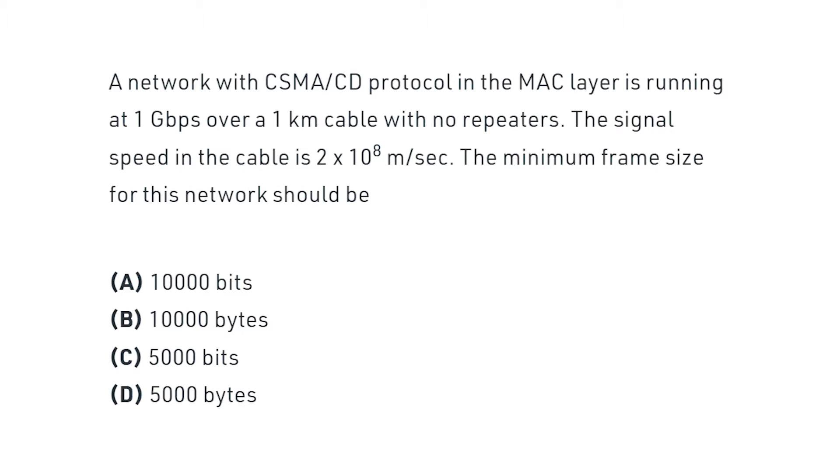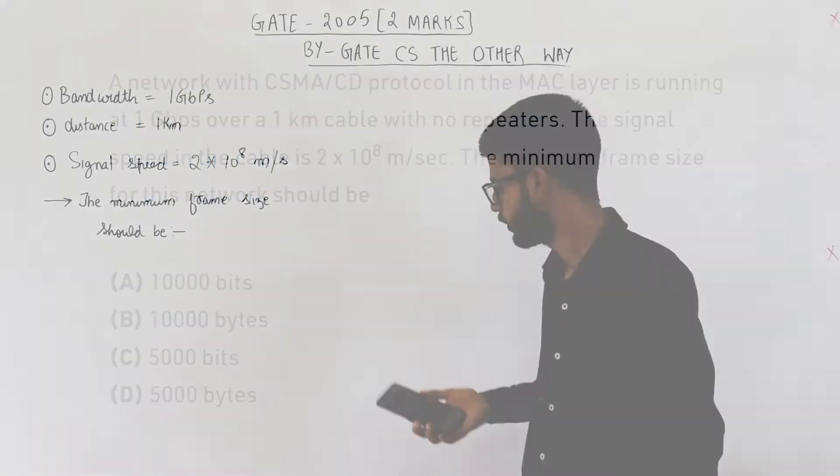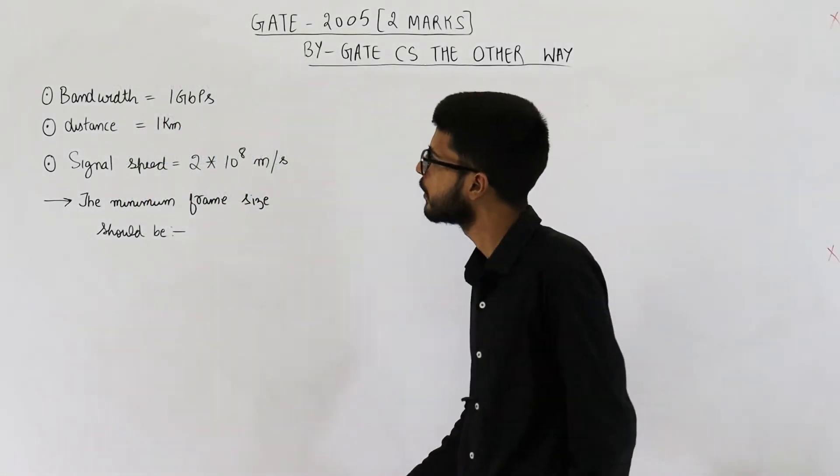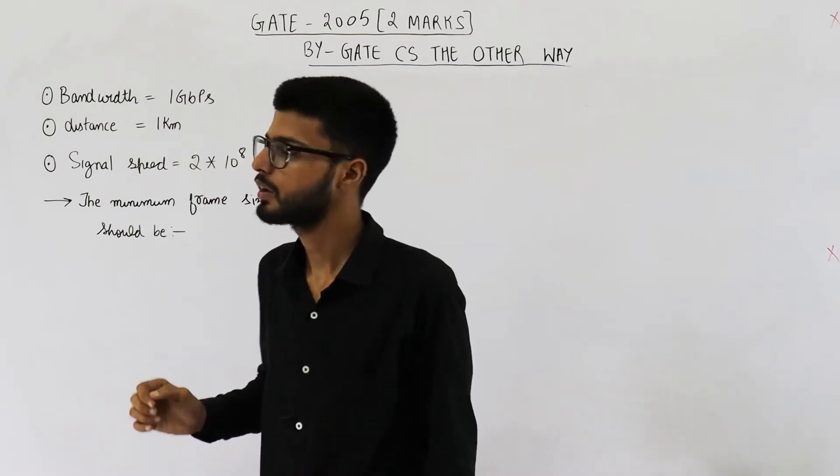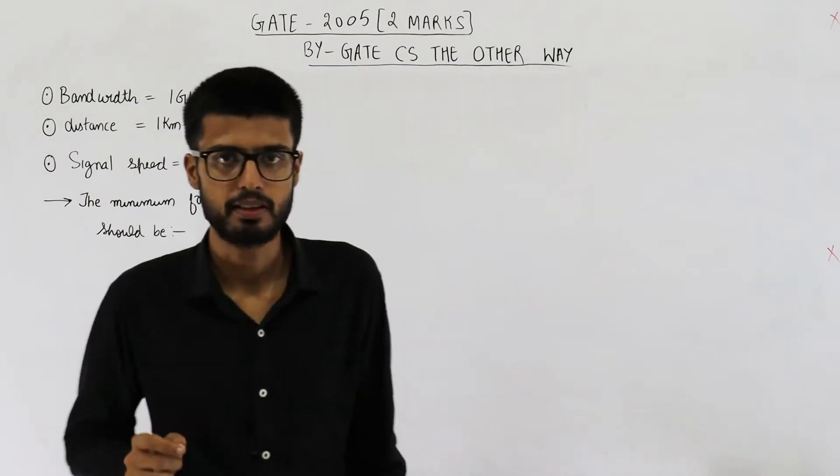The signal speed in the cable is 2 into 10 raised to the power 8 meters per second. The minimum frame size for this network should be. We need to find out the minimum frame size for this network and they are using CSMA/CD.